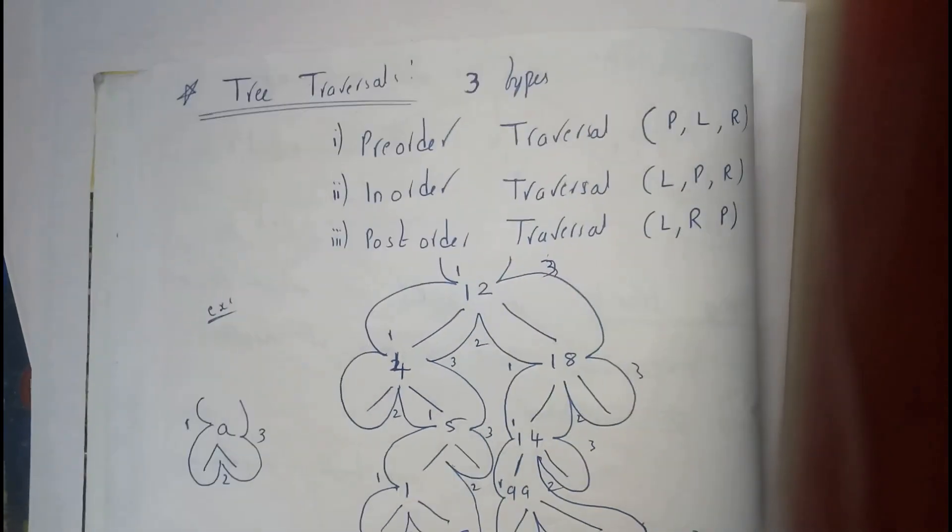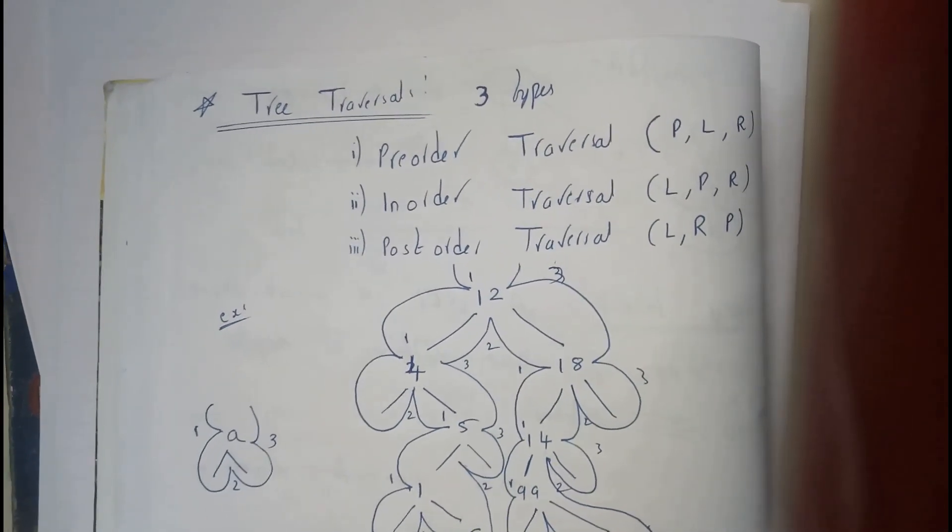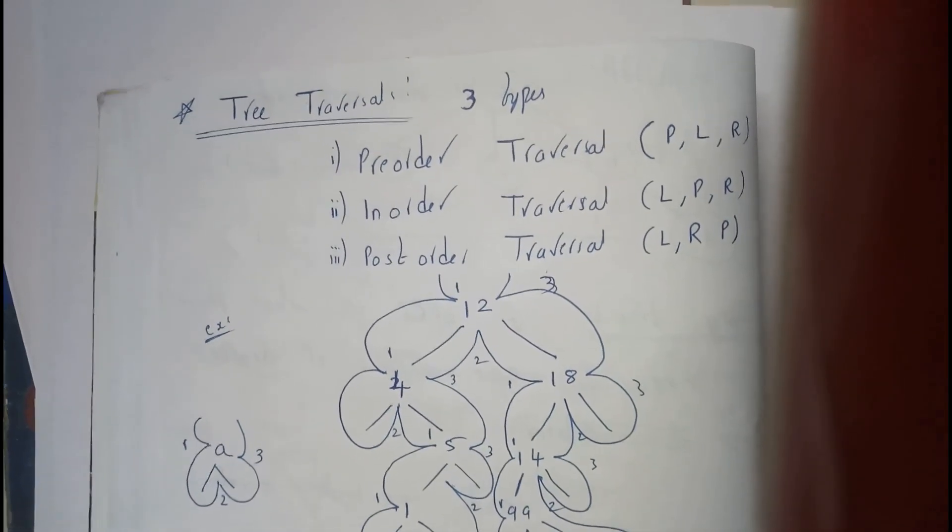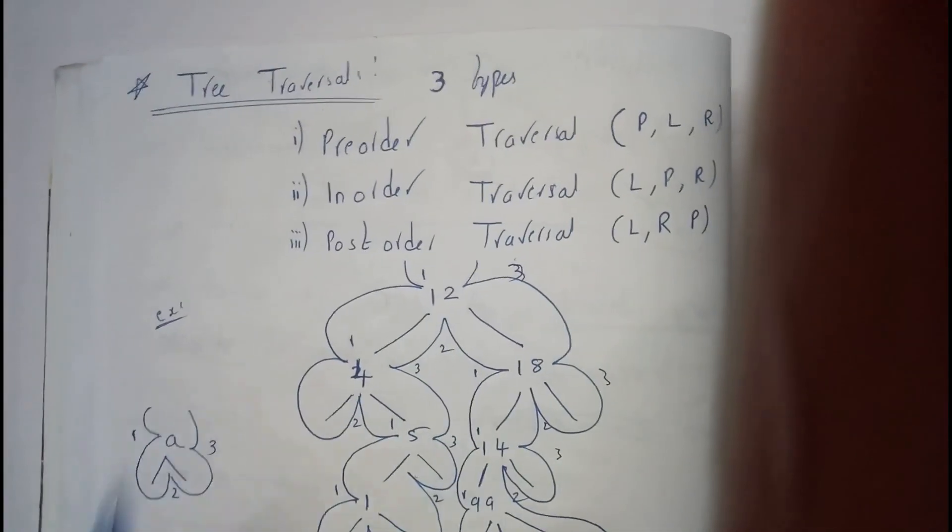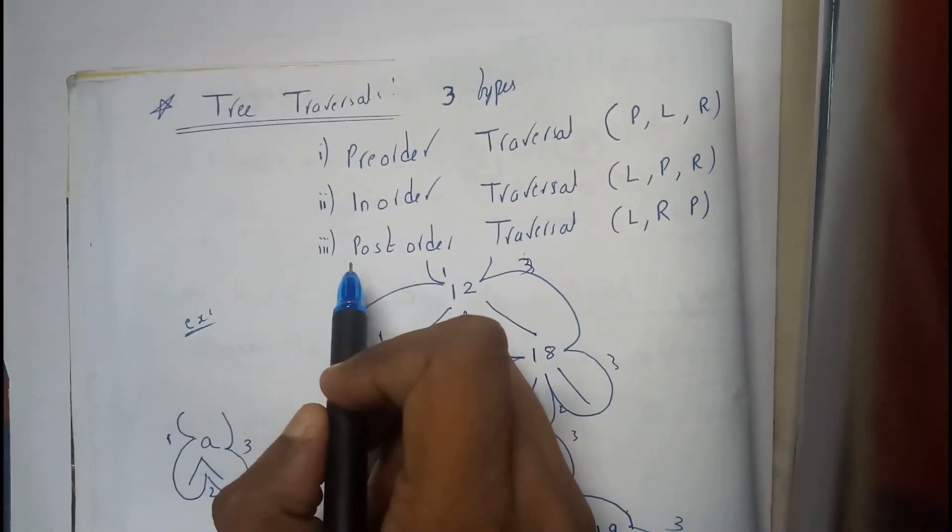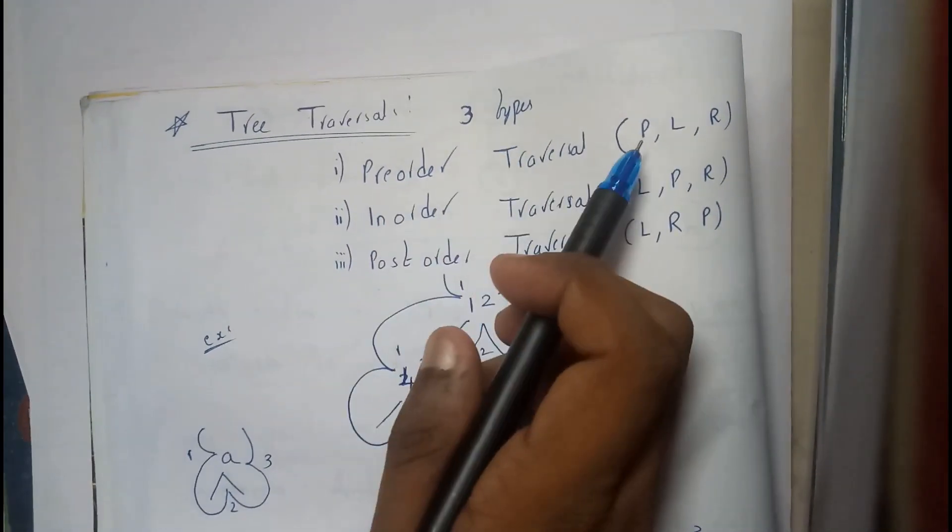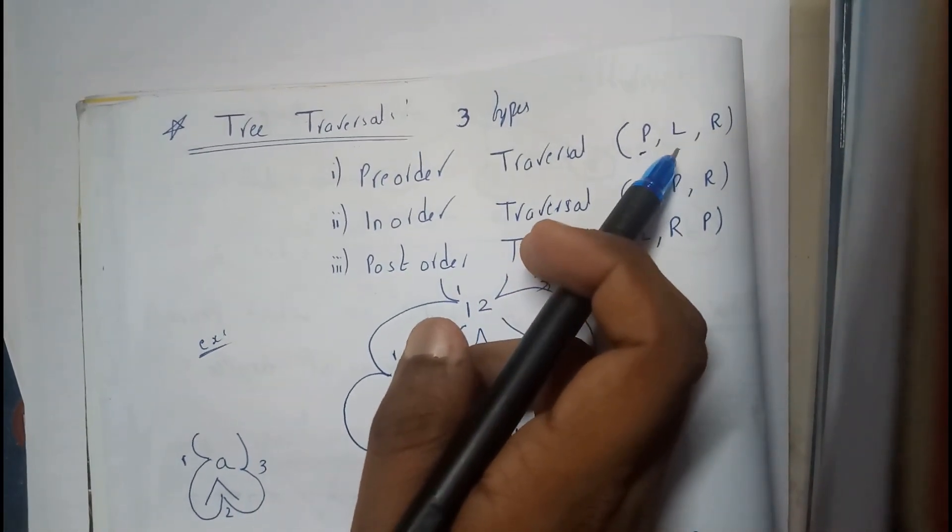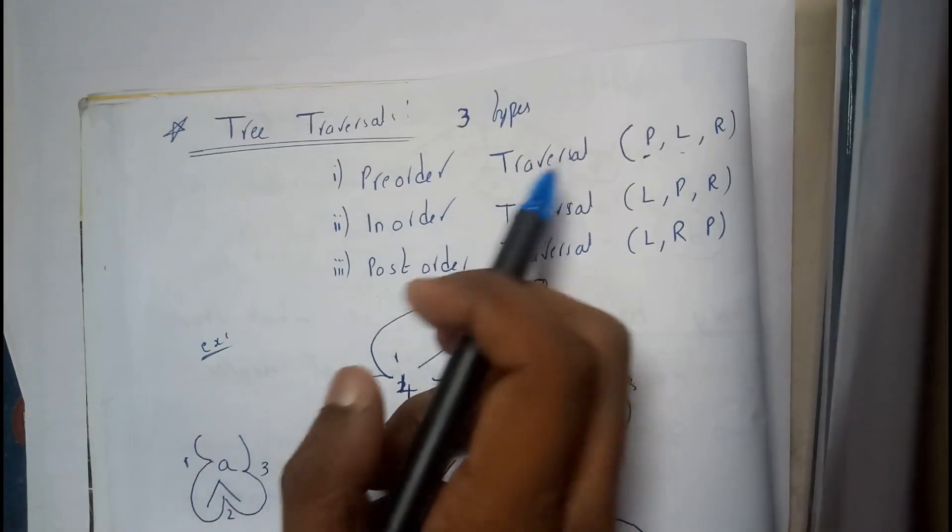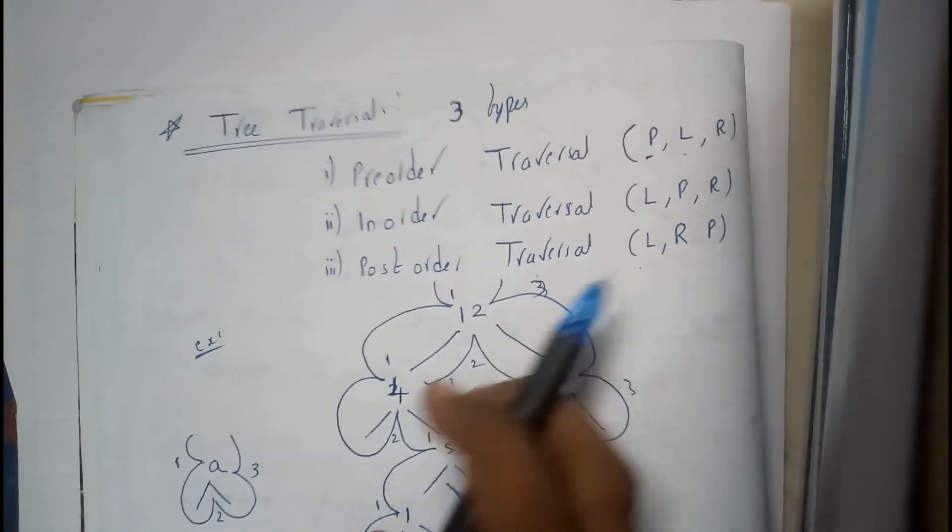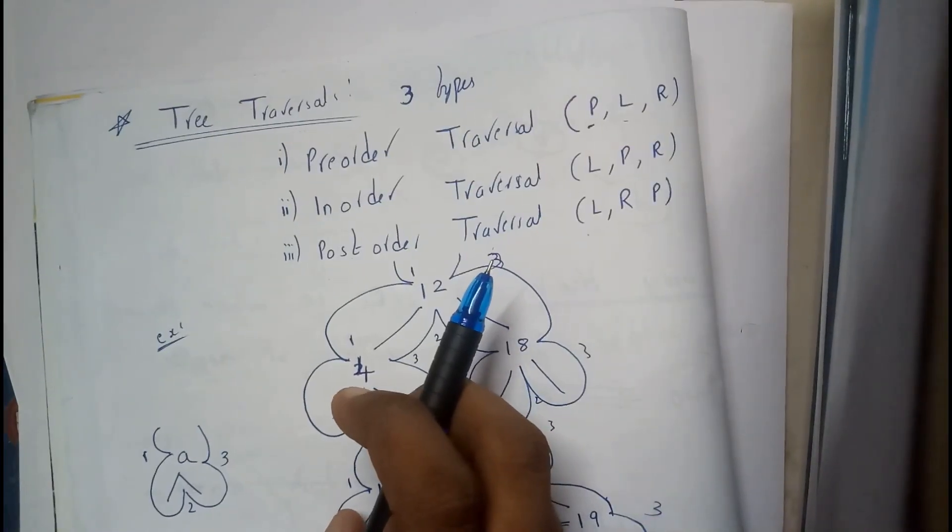In this tutorial, let's see what tree traversals are. The tree traversals are majorly divided into three types: one is pre-order, in-order, and the other is post-order. In pre-order, we'll be first printing the node, then we'll be traversing to the left and then to the right. In in-order: left, print, right. In post-order: left, right, print.